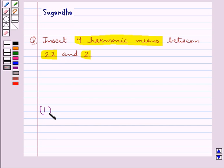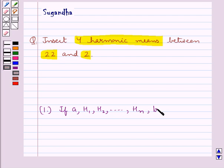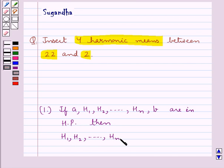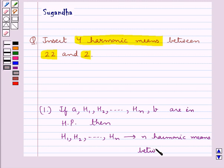First of all, if A, H1, H2, and so on up to Hn, B are in harmonic progression (HP), then we say that H1, H2, and so on up to Hn are defined to be N harmonic means between A and B.